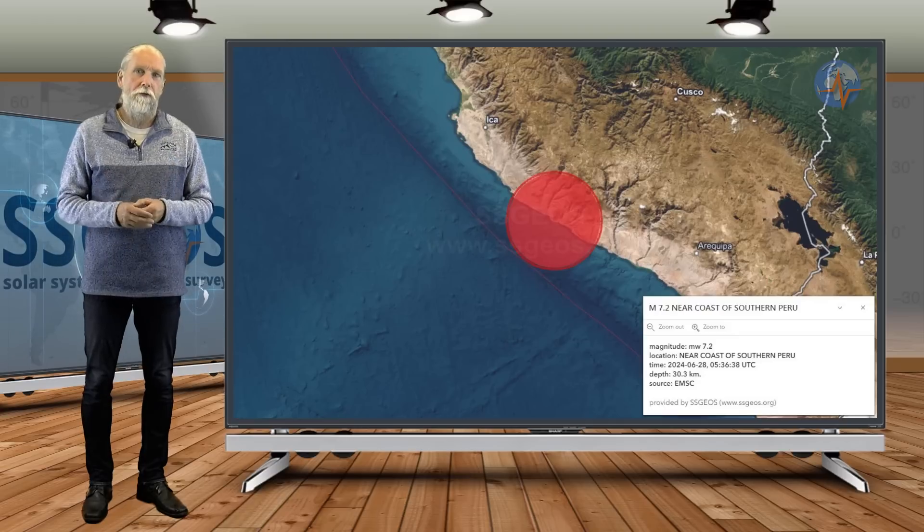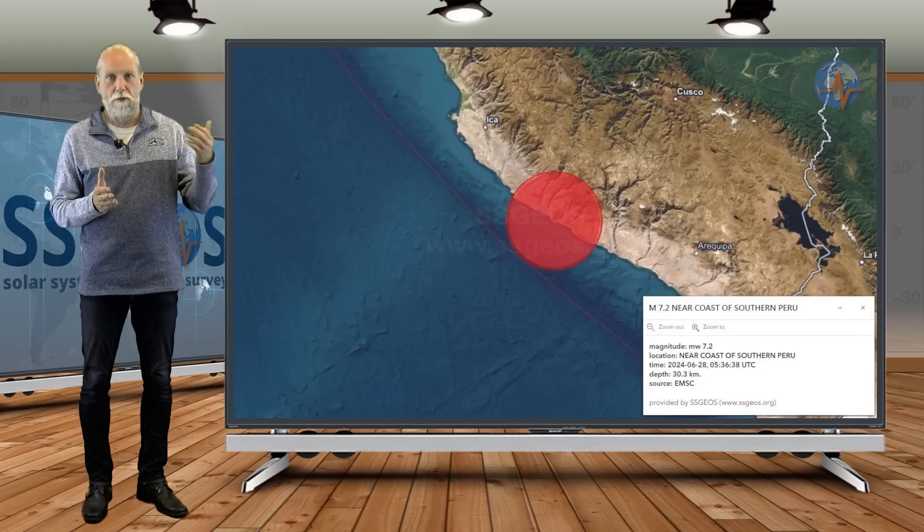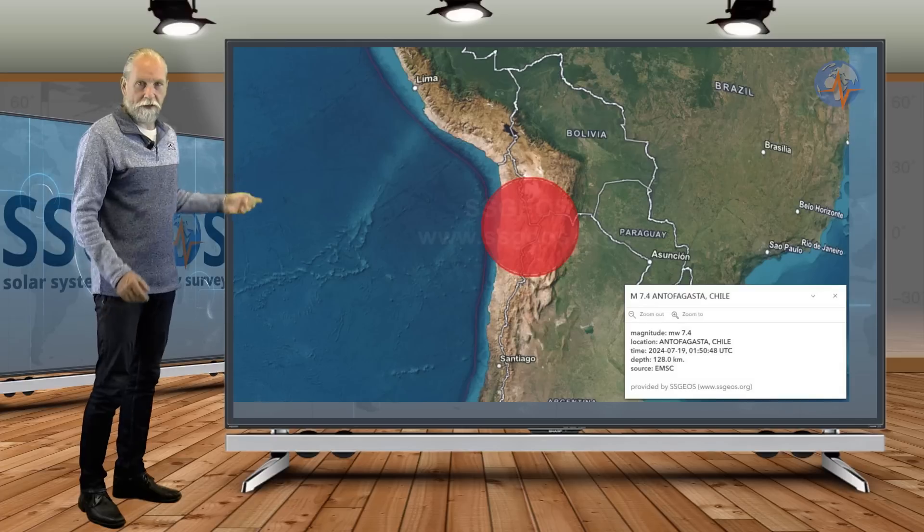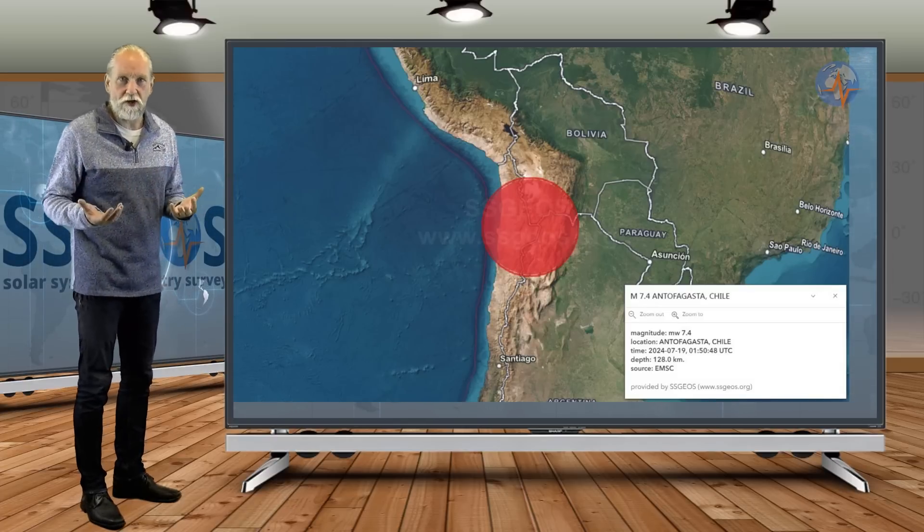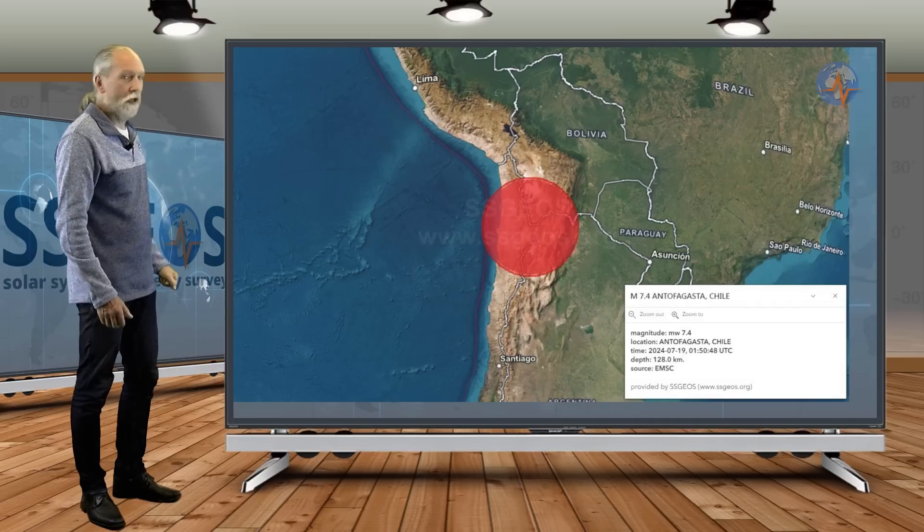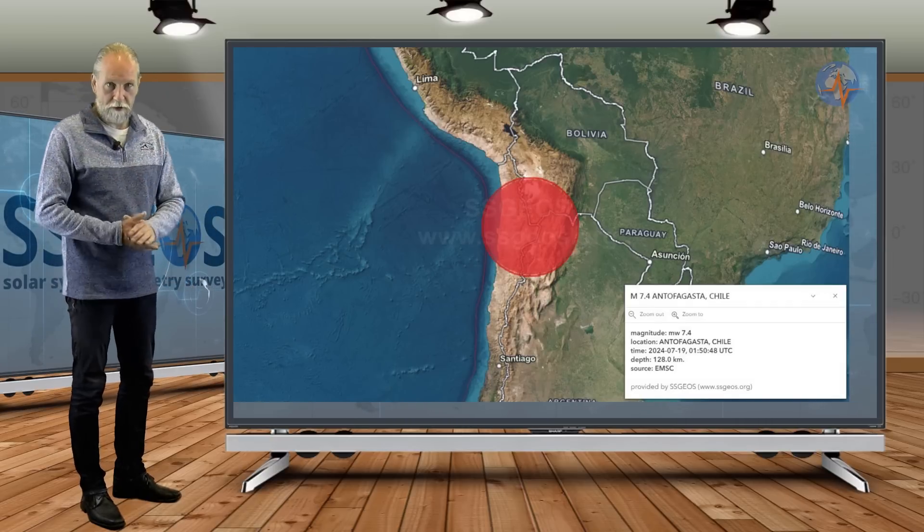All the magnitude 7 earthquakes in South America in recent years occurred in Peru, Peru-Ecuador border region. And because of that 7.2 in June, I said that stress distribution has changed and that there is increased risk of a major earthquake, larger seismic activity in Chile as well. And that just happened on the 19th.